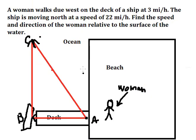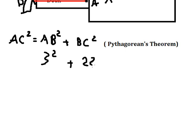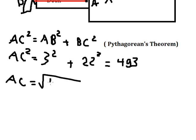So AC² = 3² + 22² = 493, and we got AC that is about the square root of 493.